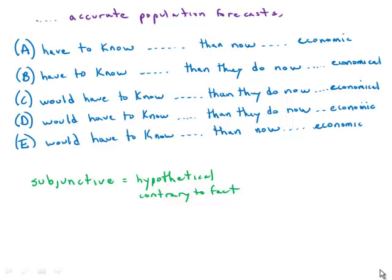Solving GMAT sentence correction is often about finding the splits among the answer choices, and this particular one about accurate population forecasts has classic splits.